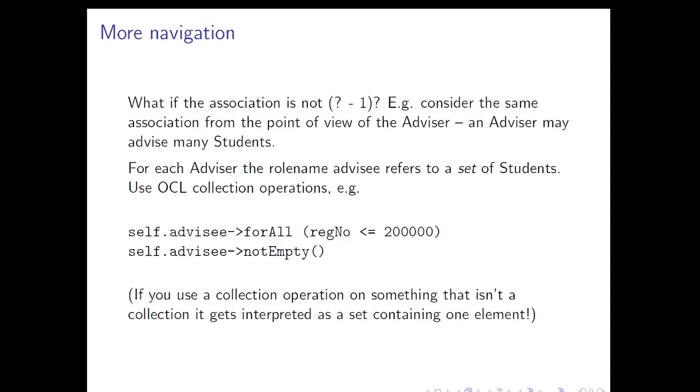But what if the association isn't to one? So suppose we, for example, consider the same association from the point of view of the advisor, given that an advisor might advise many students. Well, we do what hopefully is kind of the obvious thing. In this case, the role name, let's say advisee, refers to a set of students. So all the students who are advised by this particular advisor, all the students that are linked by the association to this particular advisor object. And then we can use that as a collection, as you saw in fact right at the beginning, and we can apply, for example, forAll constraints on it, or we can check that the set is not empty, and so on.